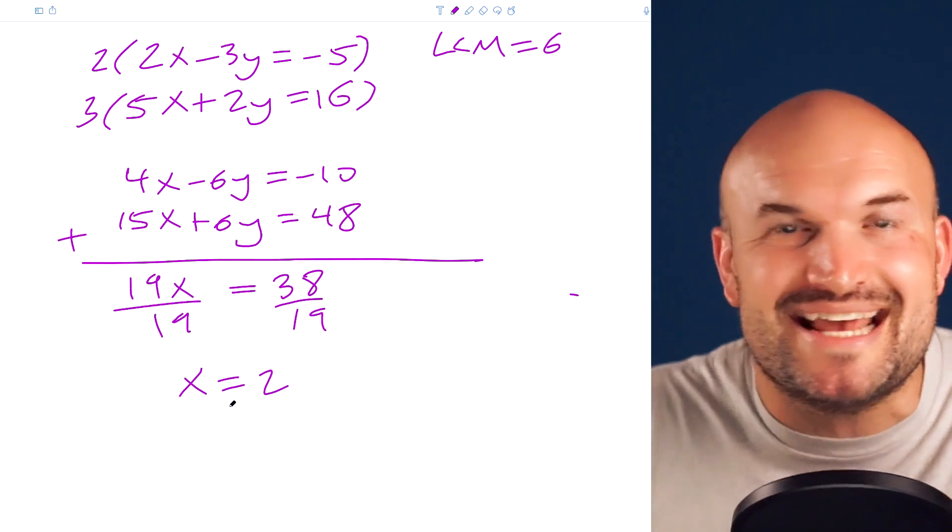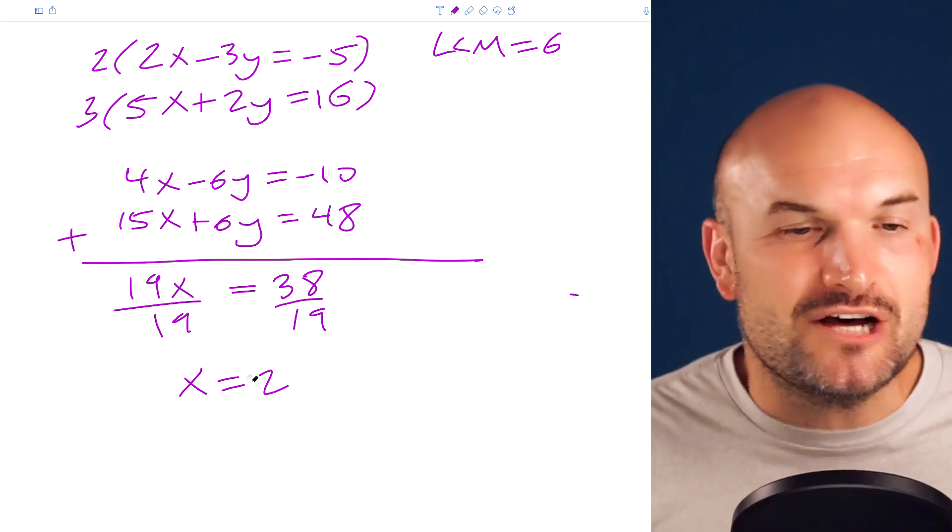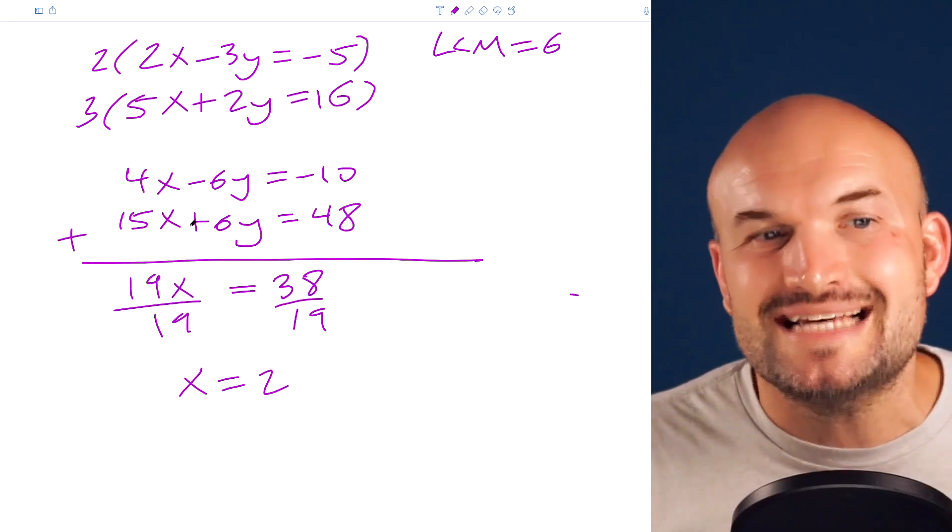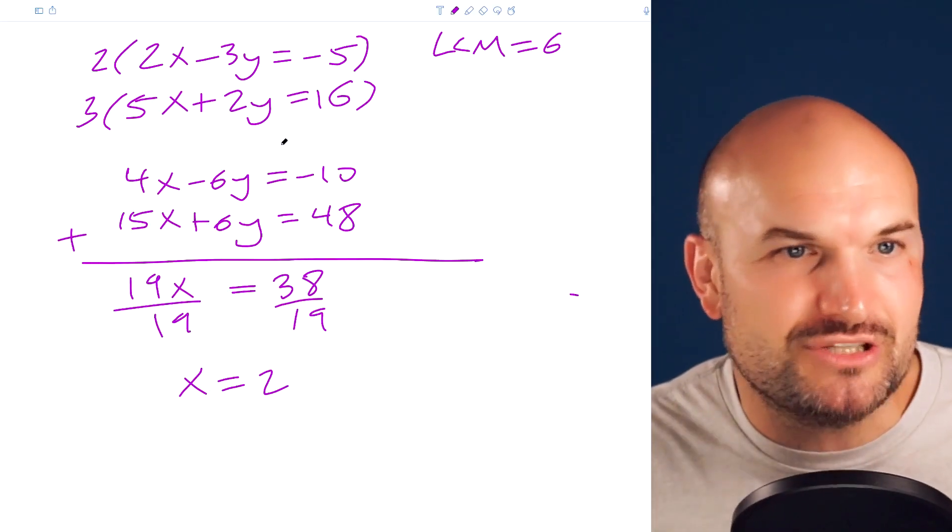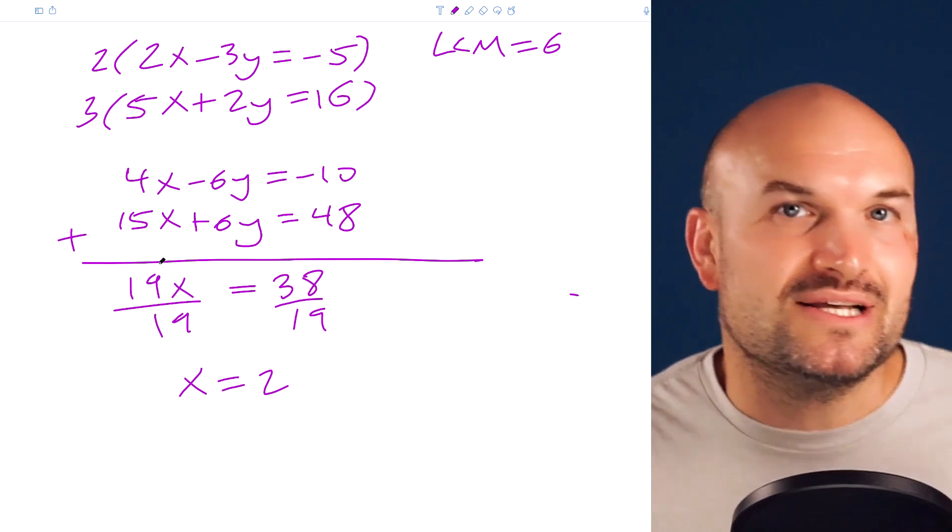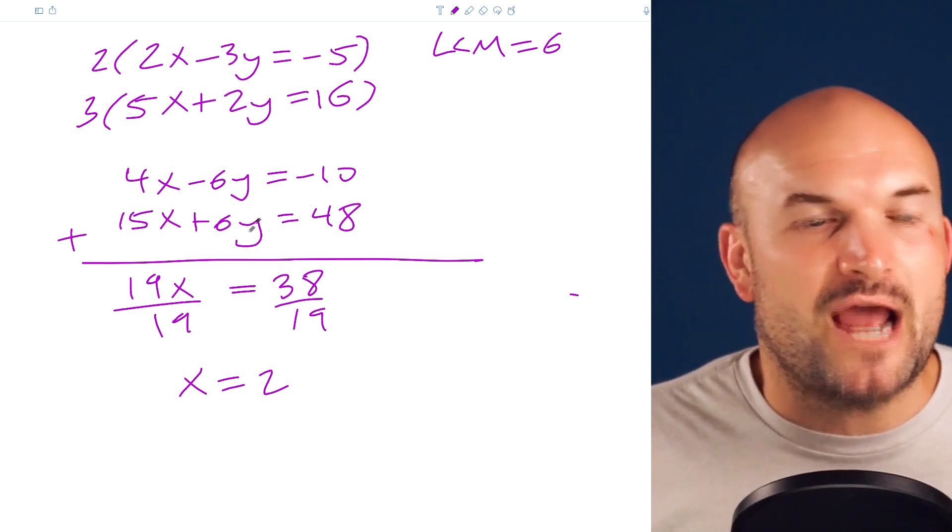Now, if you're looking for a bonus mistake that a lot of times students make is when they just solve for y, they always want to sometimes solve it into the second equations. But a lot of times you can see that the math would actually be a lot easier with this original equation. So this isn't a mistake that happens a lot, but I do see some students that they always feel like they have to use these equations.